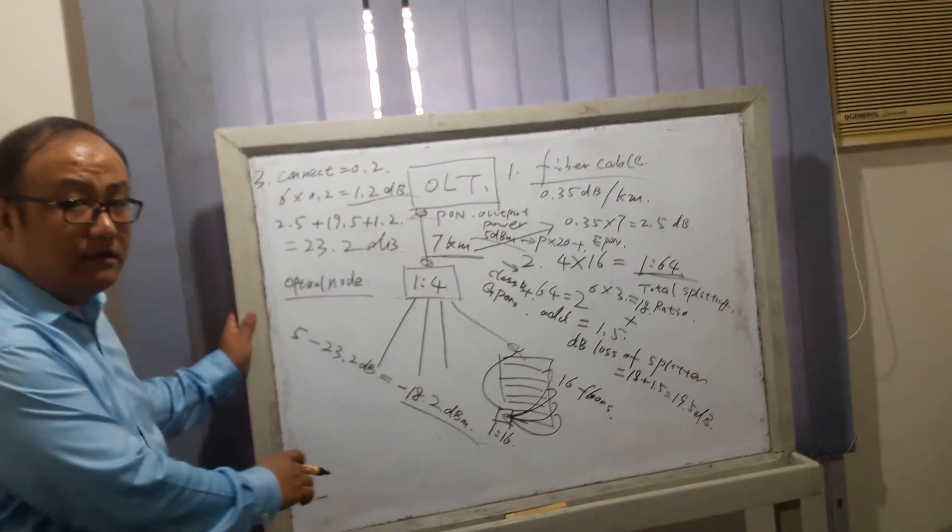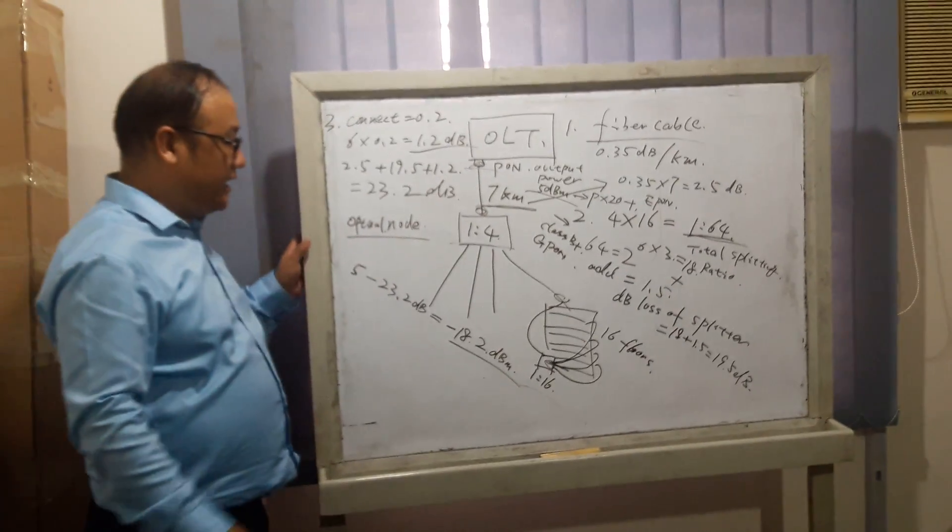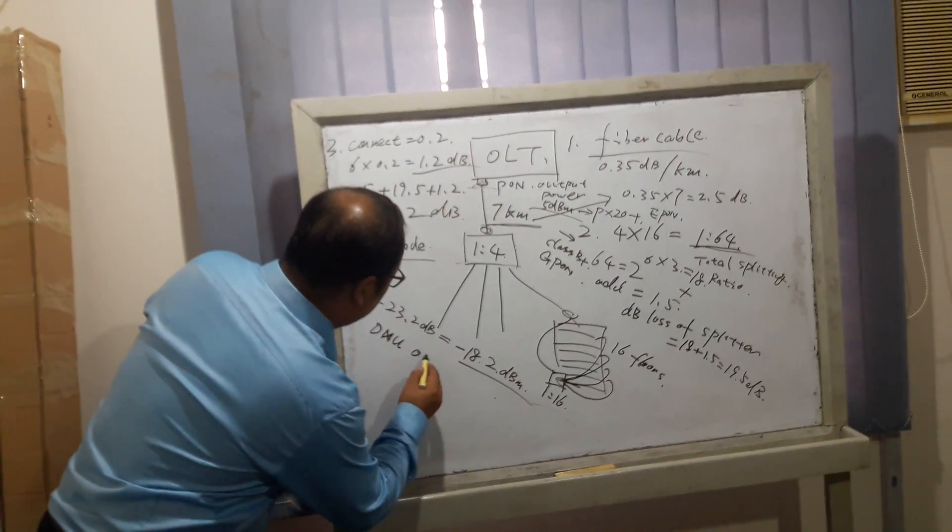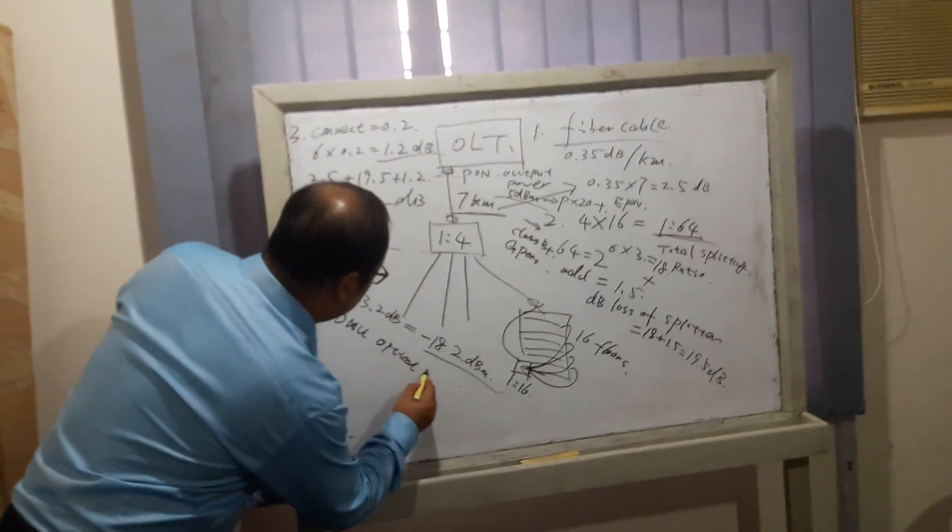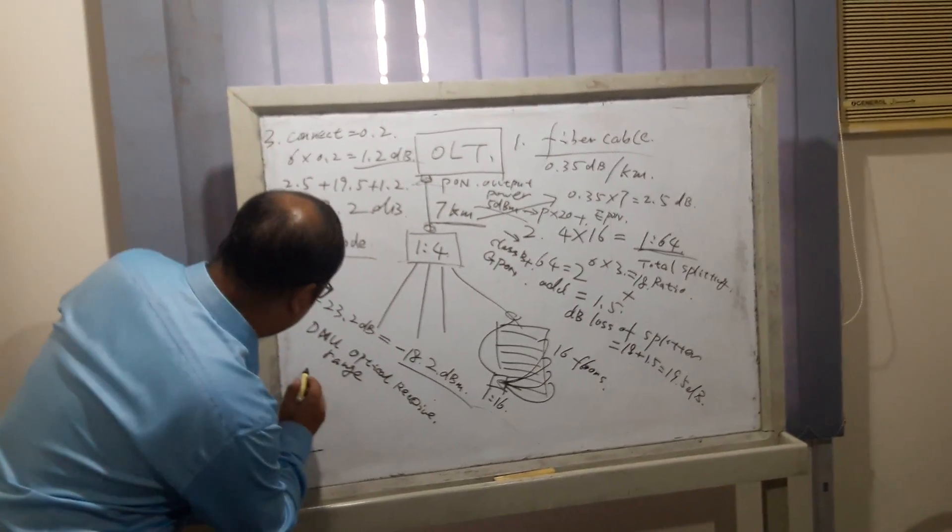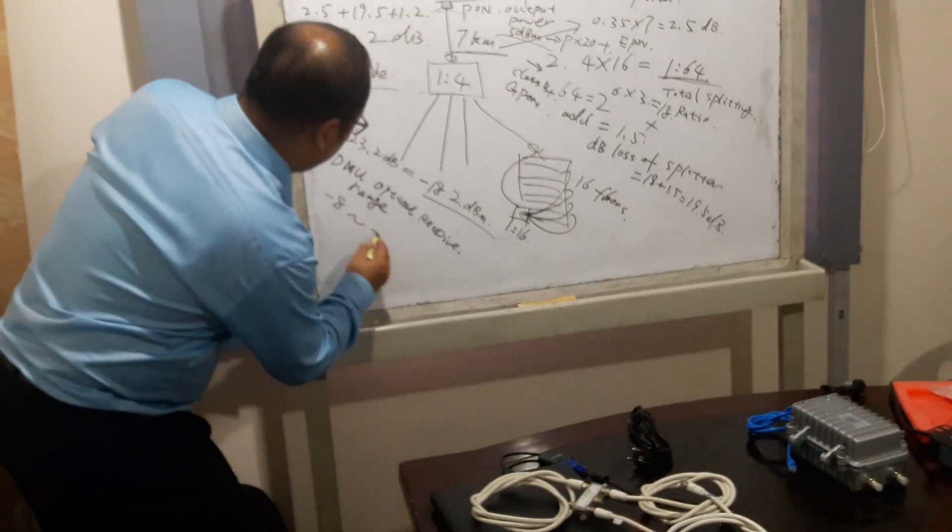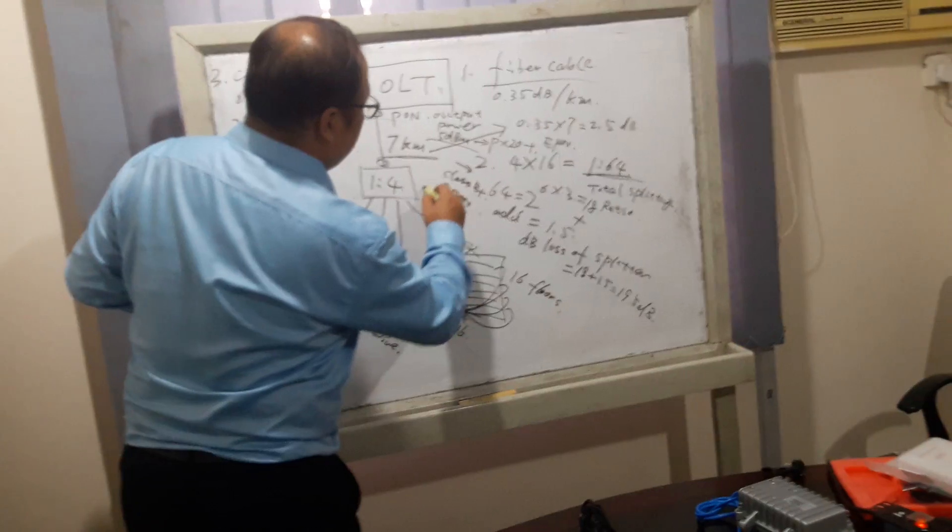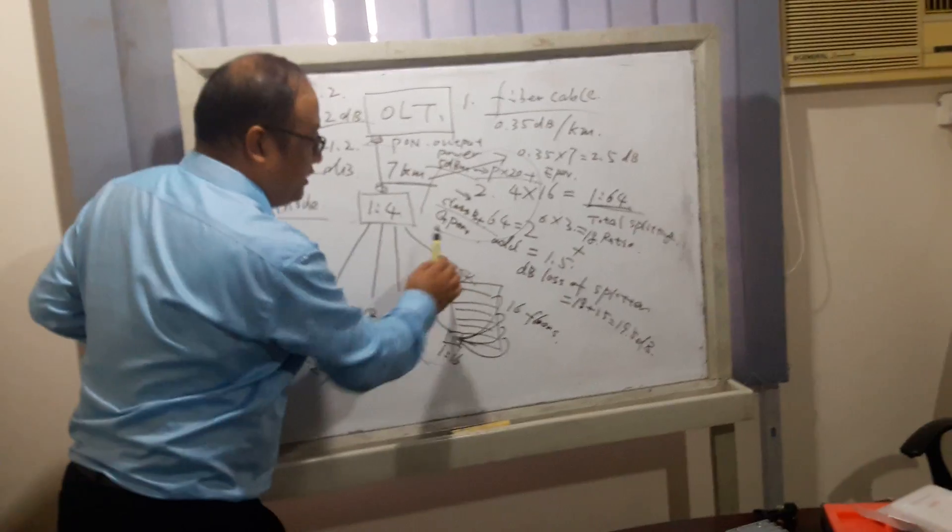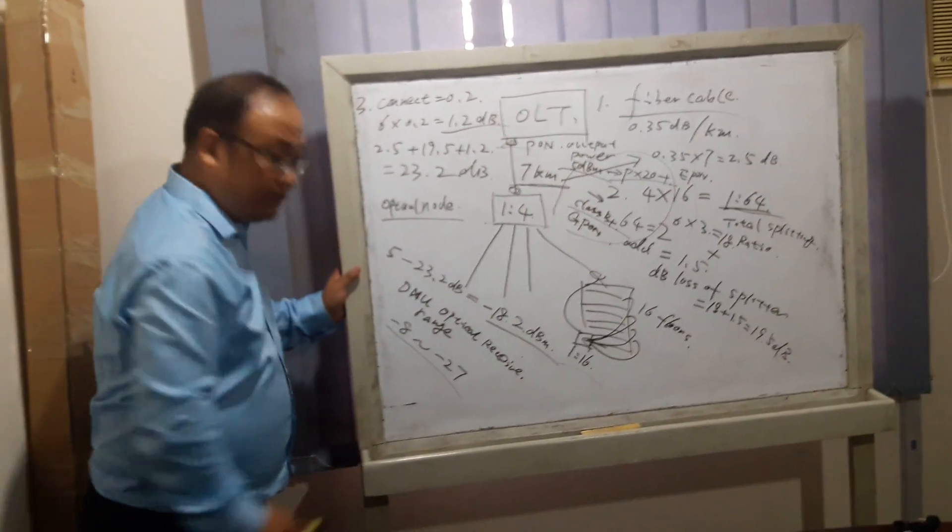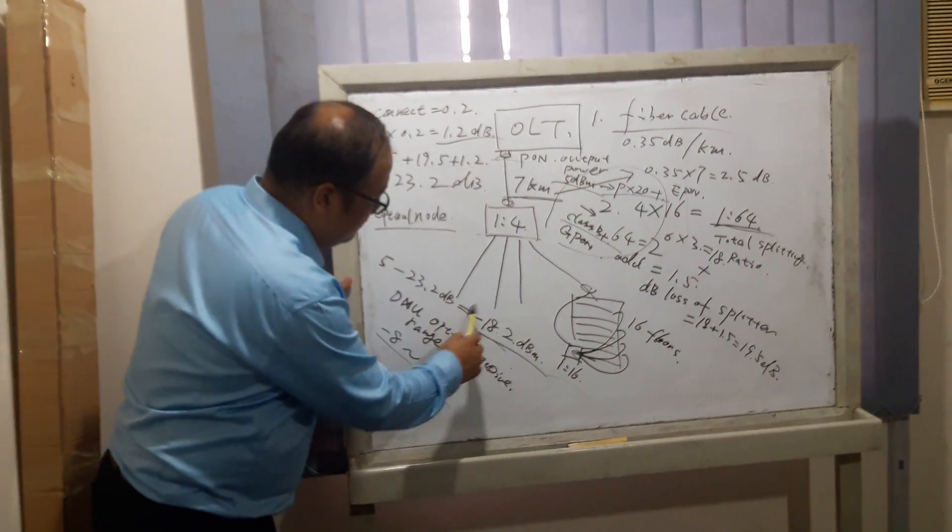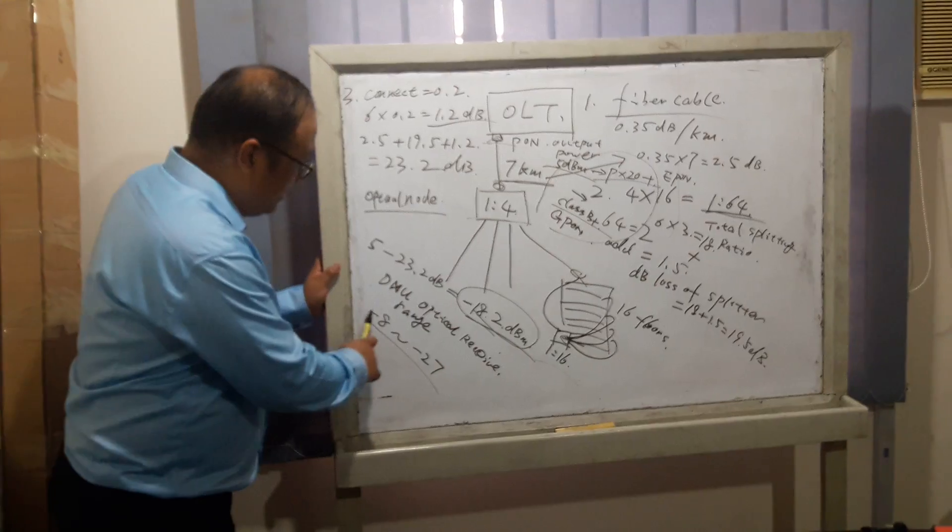This is the ONU received optical power. The ONU optical receive sensitivity range is -8 to -27 dBm. For PX20+ and Class B+ EPON and GPON, the receive range is this. We can see this parameter is within range, so it works.